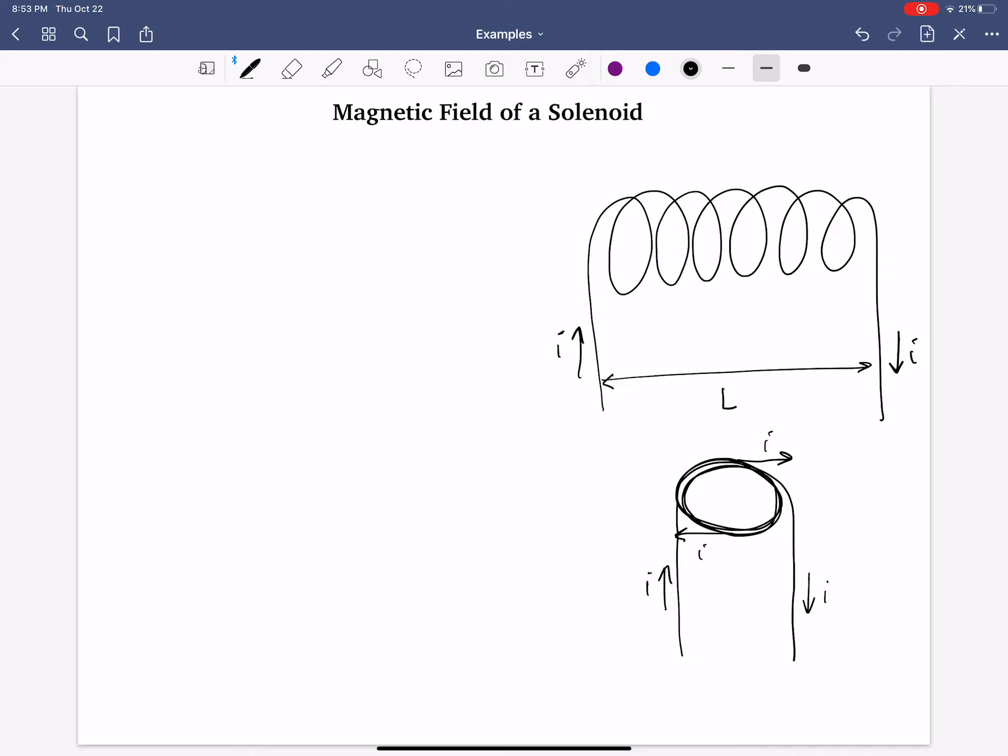So that means that inside this loop, the magnetic field is into the page, or into the screen. And outside, it means that it's out of the screen. So drawing that above, that means that there is a magnetic field to the right. And we'll draw that in blue.